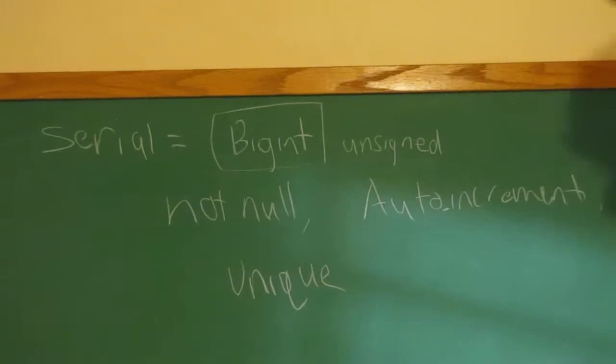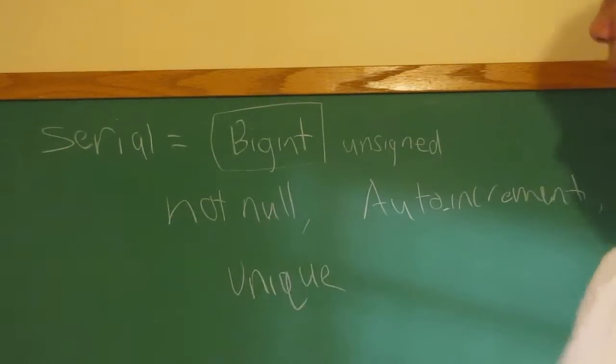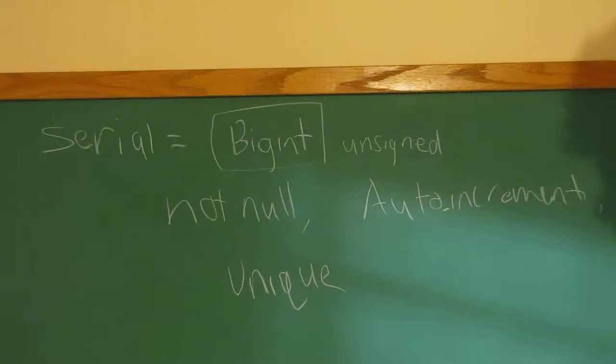Now, if you watched my last series, you'll know that not null means that there always has to be an entry. Because null is nothing. So not null means something. So you have to enter into a serial.